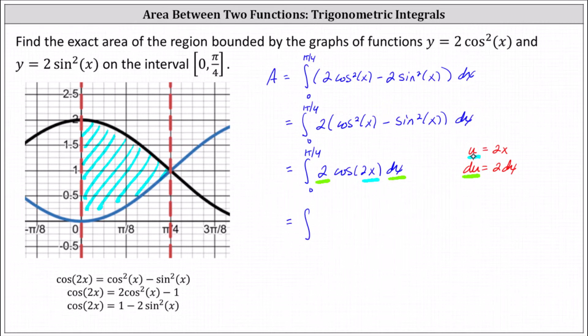When x = 0, u equals 2 times 0, which is still 0. When x = π/4, u equals 2 times π/4, which is 2π/4, or π/2.